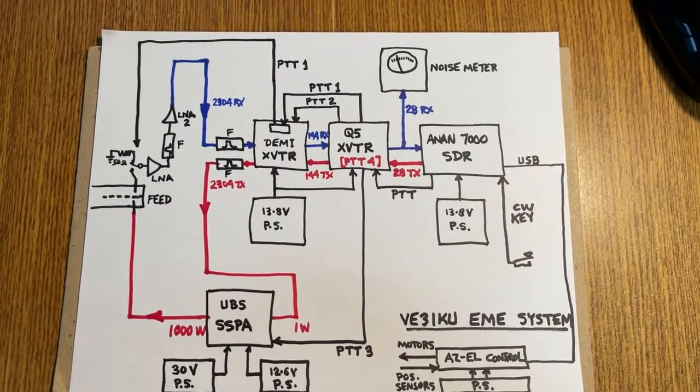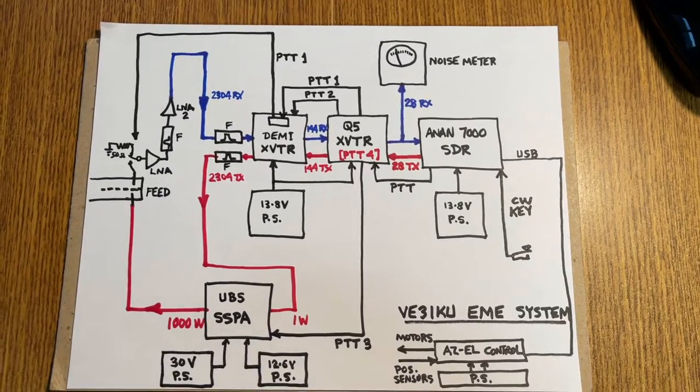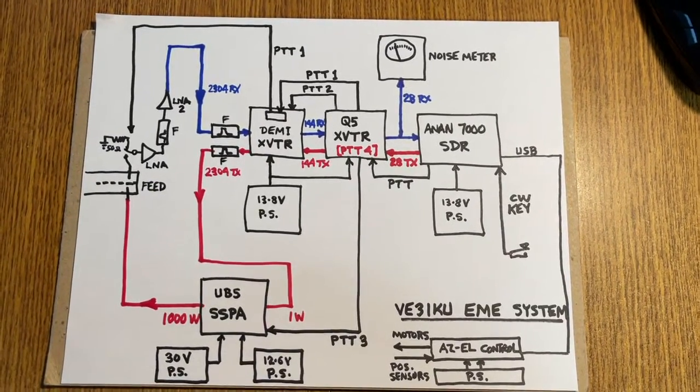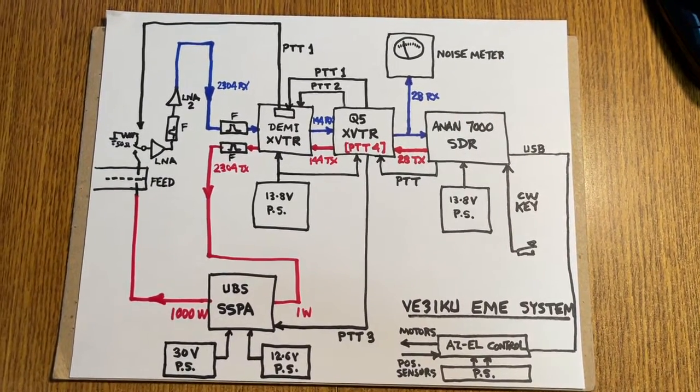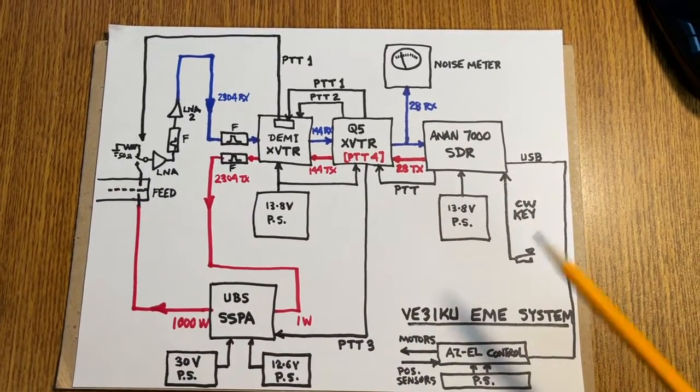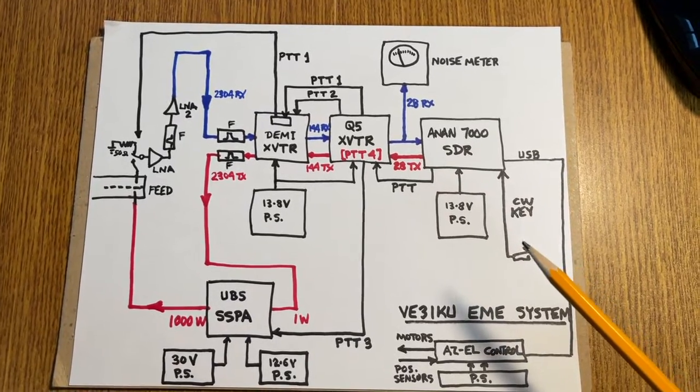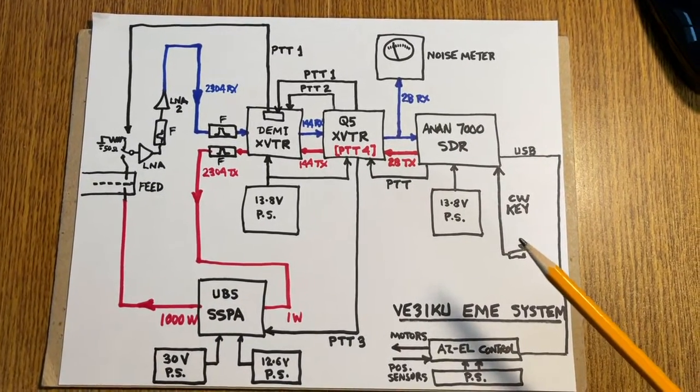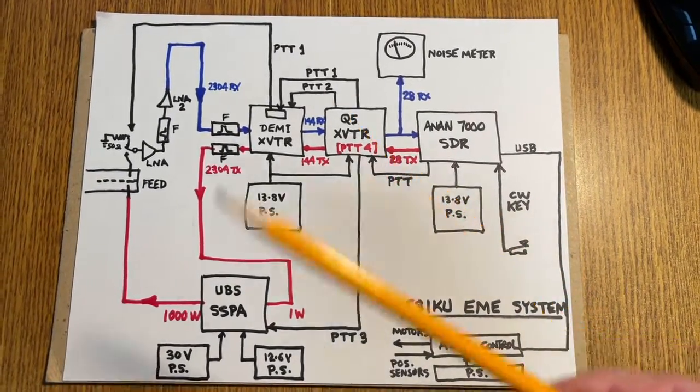This all happens in less than 100 milliseconds in those four steps, and the reverse, of course, when you switch back to receive. And once that's switched over, then you can send your CW code. And then when you release the key after the semi-break-in time is over, the sequencer then does the reverse.